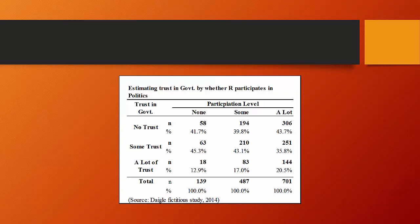This is a cross tab estimating trust in government by whether the respondent participates in politics. We have an independent variable, the level of participation, and a dependent variable, how much trust someone has in government.